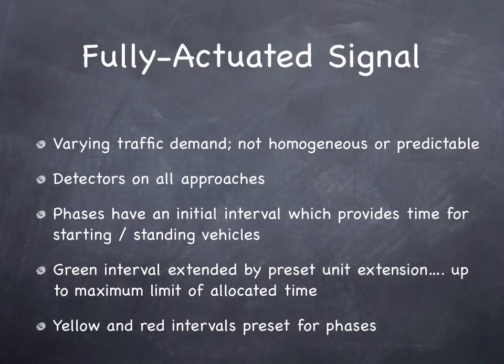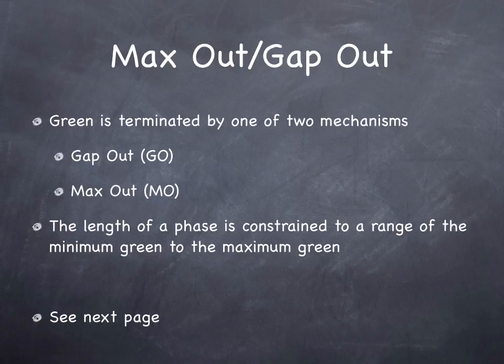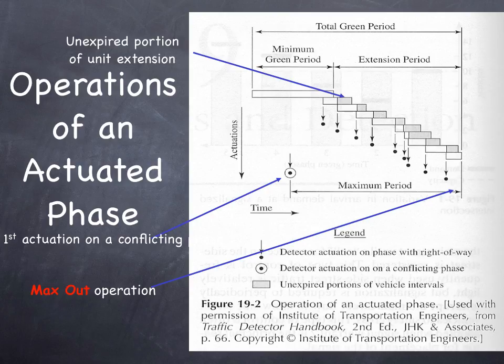Fully actuated signals have actuators on all approaches, allowing us to account for varying traffic demand. There is some initial interval, and then the interval is extended if the actuator keeps getting triggered. If there's a large enough gap between vehicles, we conclude there are no more vehicles on that approach, turn that light to red, and give green to other approaches up to some maximum time. In a fully actuated signal, each phase has a minimum time and a maximum time, and where you fall between those depends on actual traffic conditions. The green interval is extended by, say, two seconds every time the actuator is tripped within two seconds of the previous trip.